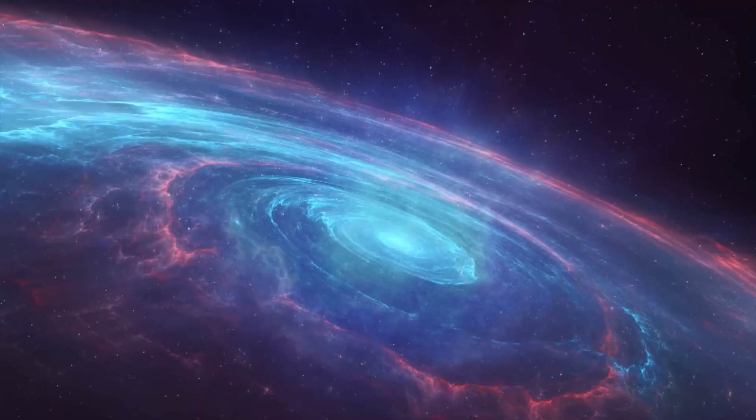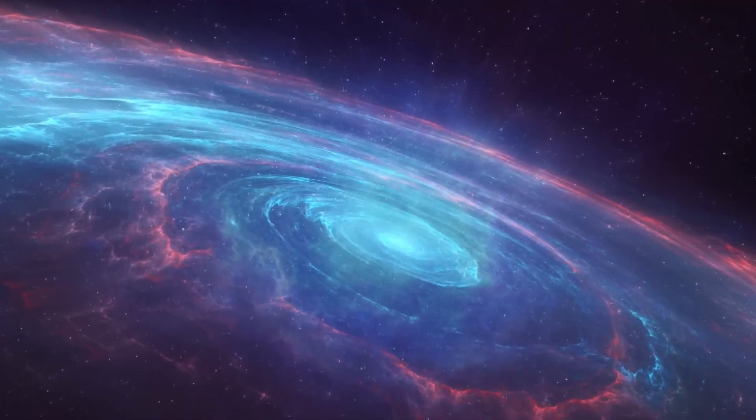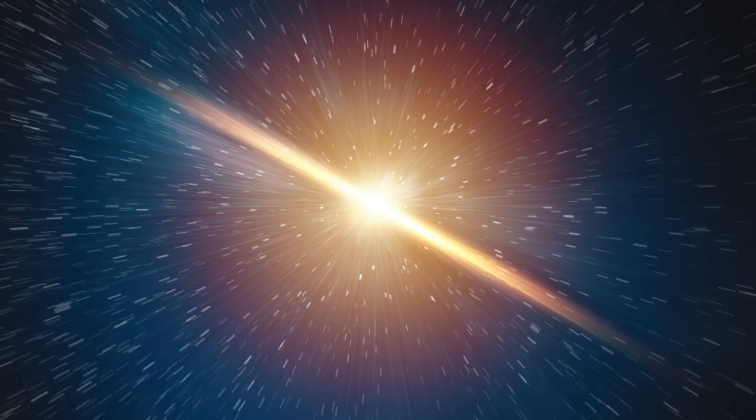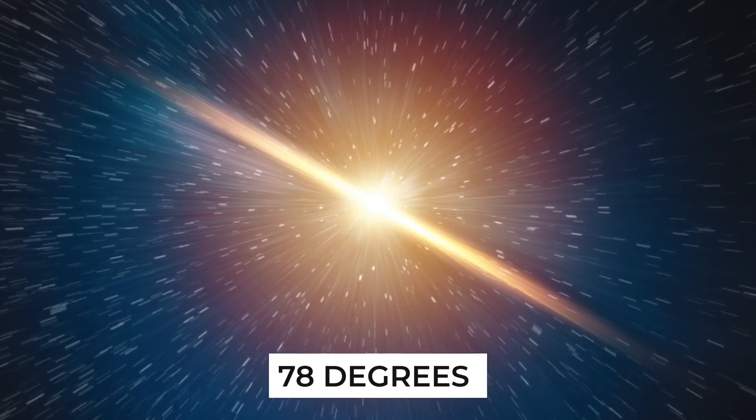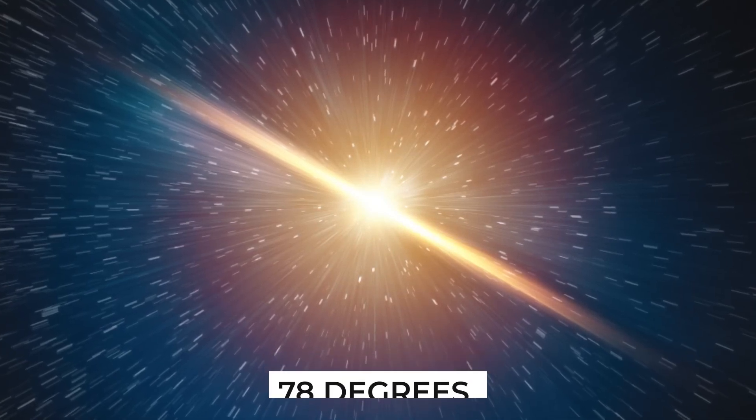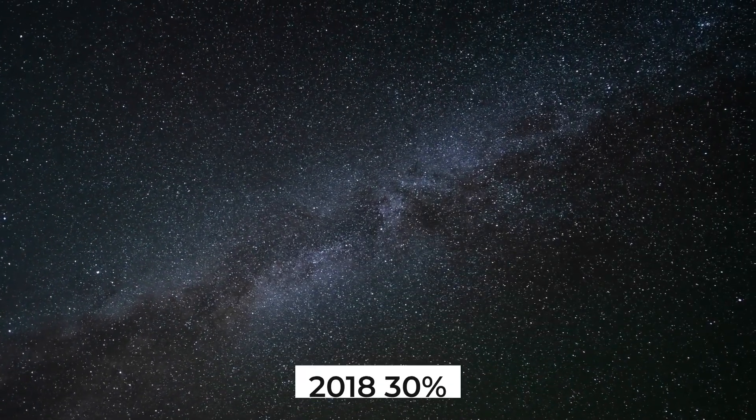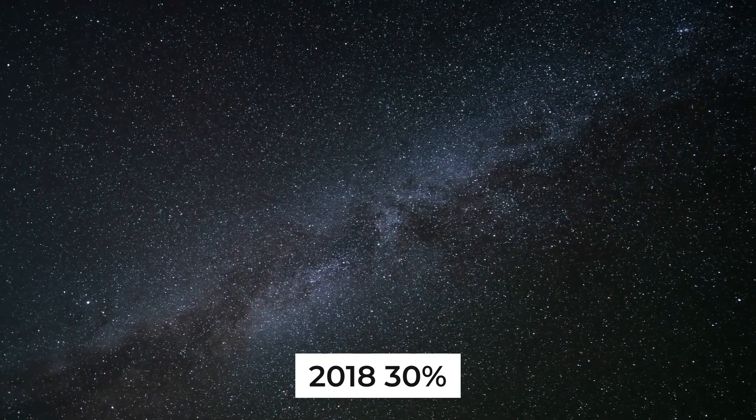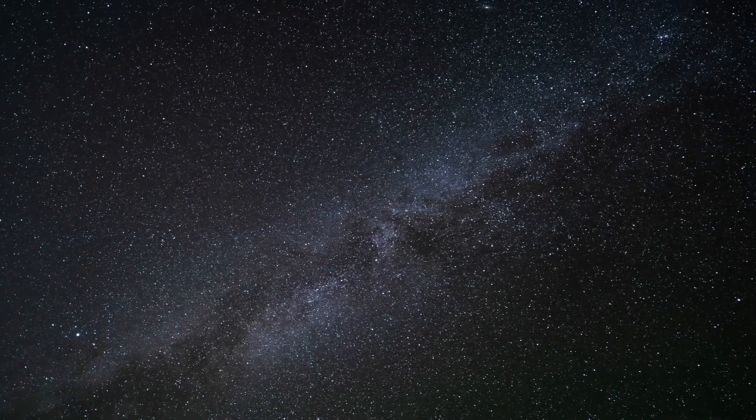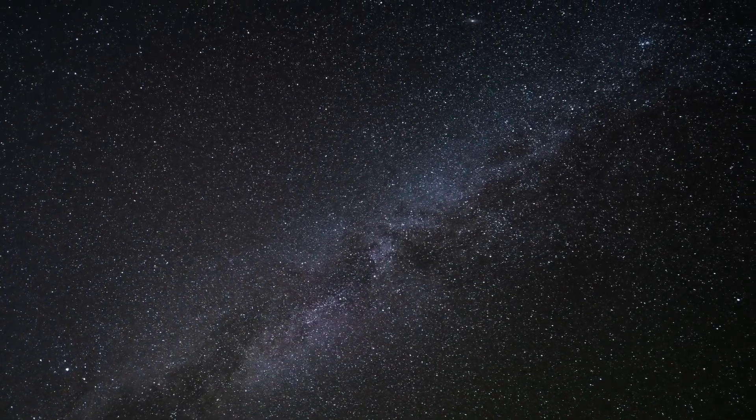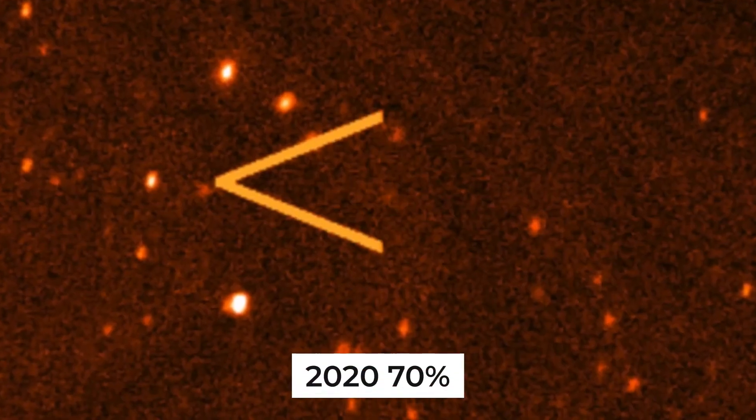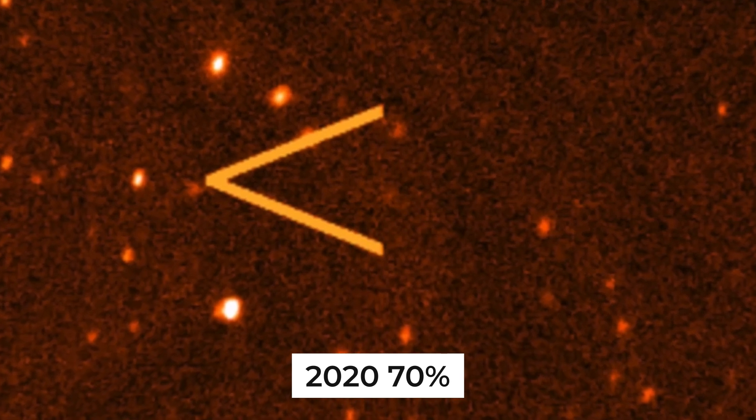Eris's axial tilt has not been measured, but it is likely to be identical to Dysnomia's orbital inclination, which is roughly 78 degrees with respect to the ecliptic. If this was the case, then in 2018, 30% of Eris's northern hemisphere would have been constantly lighted by sunlight, and in 2020, 70% of the hemisphere would be bathed in sunlight.